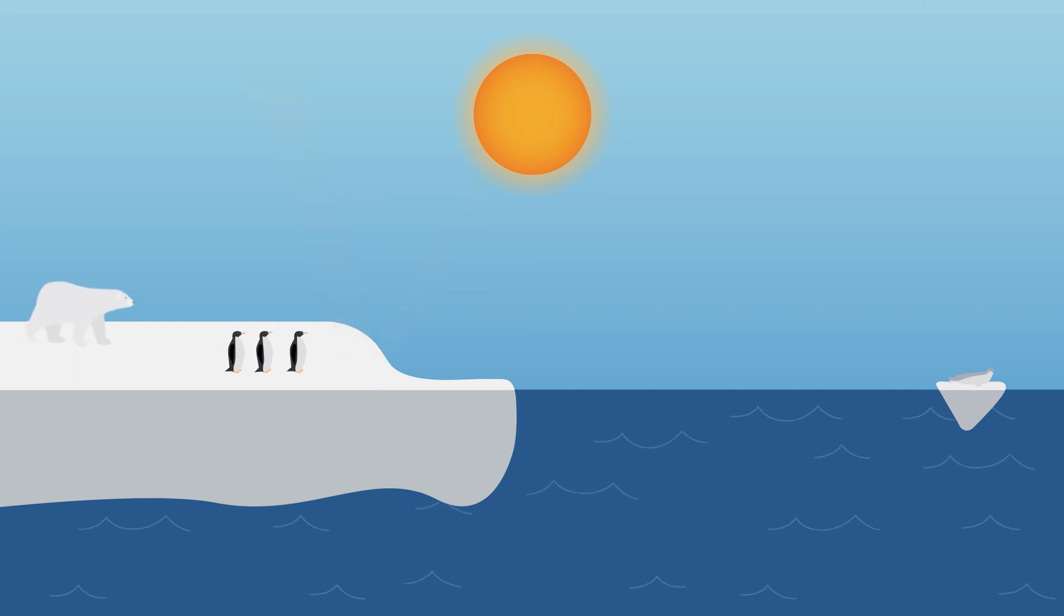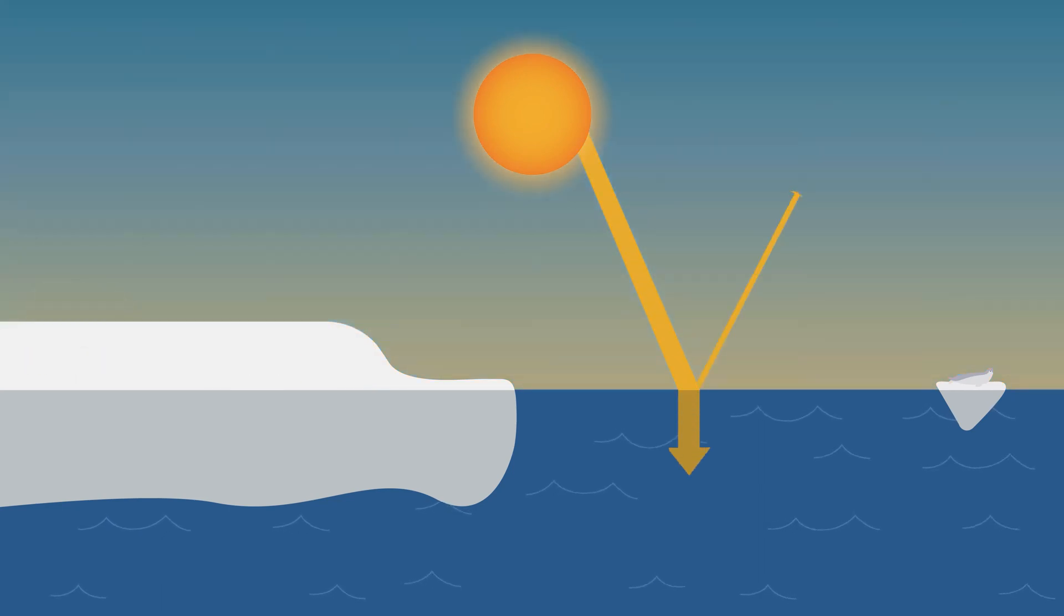But in contrast, a dark surface like open ocean waters can absorb more heat than it reflects.